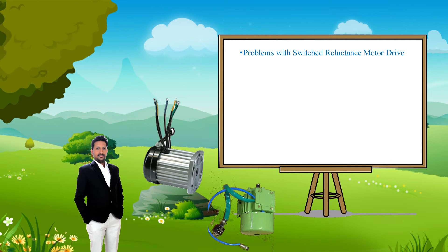The rotor position sensing system also affects the reliability of the system depending upon its type. Torque of the SRM depends on phase currents and rotor position, which when operated with stepwise currents results in significant torque ripple. Thus, torque ripple minimization schemes need to be incorporated with conventional control schemes. Due to SRM's salient pole structure, its air gap does not remain constant like other motors and varies with rotation, resulting in unbalanced magnetic pull on the rotor pole, which causes torque ripple and acoustic noise.